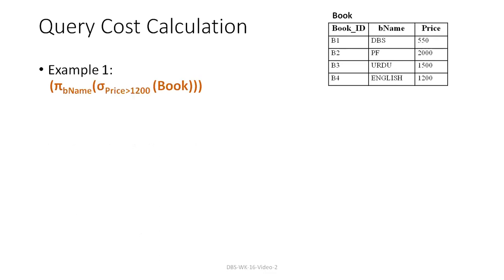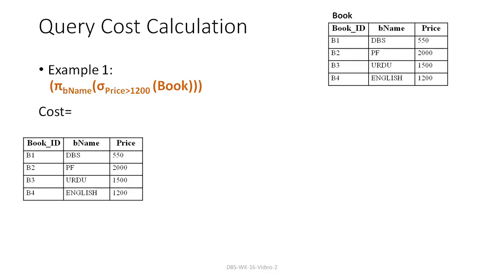We have a query — Book. This is the database. Book read — this is the operation. This is the DBMS cost. The result is an intermediate result. For example, if we have 4 rows, each row requires 1 read operation, so 4 rows means 4 read operations.